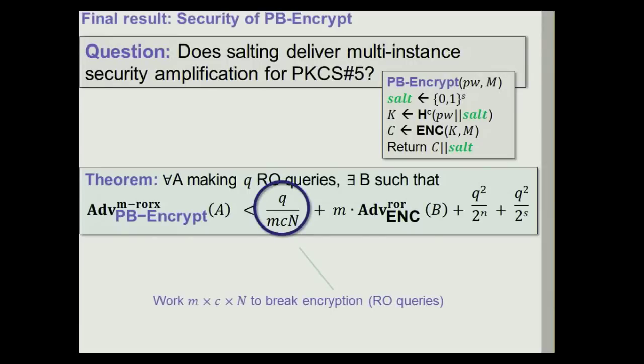And in particular, if we look, you don't have to look at the bound in detail, but it means that as long as the underlying encryption scheme is semantically secure, then the leading term in this bound is going to be this one, which is going to tell us that we really need to invest work M times C times N to break the underlying password-based encryption, where work is measured in terms of random oracle queries.